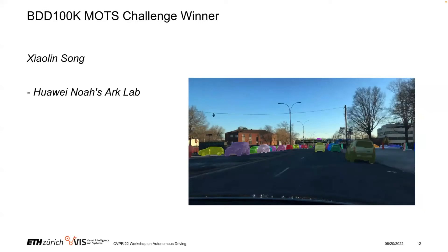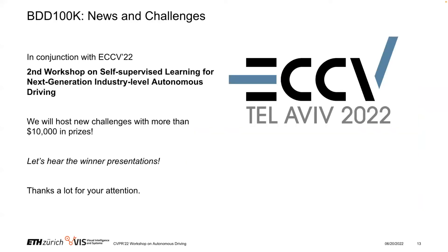Last but not least, a quick announcement: at ECCV 2022, at the second workshop on self-supervised learning for next generation industry-level autonomous driving, we will host even more new challenges with more than $10,000 in prizes. So stay tuned for that. And now I'll give it to the winners and we'll hear their solutions. First up is the MOT challenge winner.